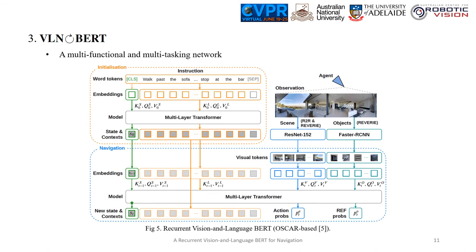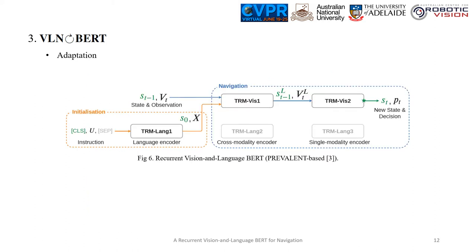Overall, the recurrent VLN BERT is a multi-functional network which encodes the language, performs cross-modal grounding, tracks the agent's state, and makes decisions. It is also capable of multi-tasking, addressing the navigation task and the remote object grounding task simultaneously. The idea is generalizable to many transformer-based models due to its simplicity and effectiveness. In this paper, we adapt the model to Prevalent, a transformer-based model pre-trained especially for VLN.